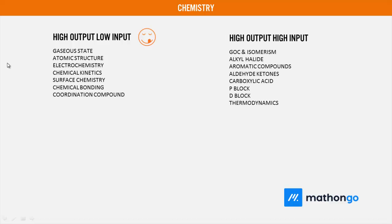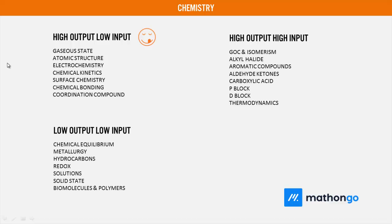Whereas high output and high input - input will be more, output will be more, questions will be tough. Generally you will see organic chemistry coming into play. For example: GOC isomerism, alkyl halides, aromatic compounds, aldehyde ketones, and carboxylic acid. In inorganic chemistry, there are two particular topics which are more input but high output: P-Block and D-Block. These have high probability of questions. And thermodynamics - there will be a question, but it requires effort.